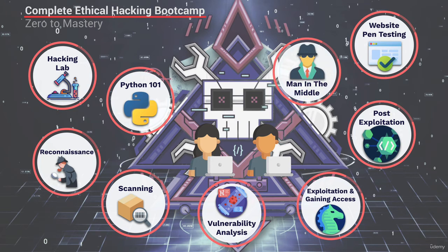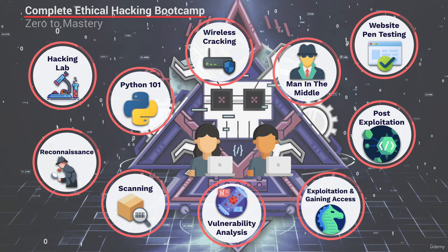Then we get into something every ethical hacker needs to know: the man-in-the-middle attack. This is an attack used inside a network that allows us to sniff any unencrypted data and see it in plain text — for example, seeing passwords for some websites. We'll cover the main tools hackers use for this attack. We then have a bonus section on Wi-Fi and wireless cracking, where we gain access to a network by cracking its wireless password, covering tools like aircrack and hashcat password cracking.